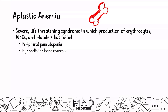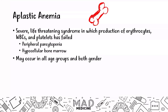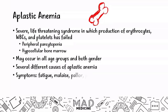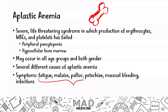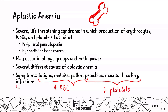Aplastic anemia occurs in all age groups and genders. The main symptoms are fatigue, malaise, pallor, petechiae, mucosal bleeding, and infections. Fatigue, malaise, and pallor are caused by decreased red blood cell production; petechiae and mucosal bleeding result from decreased platelets; and infections occur due to decreased white blood cells — the body can't protect itself.